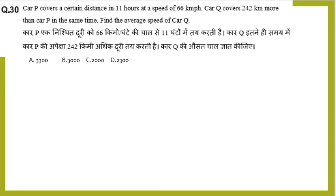Question 30: Car P covers a certain distance in 11 hours at a speed of 66 kilometers per hour. The distance formula is time into speed, so time is 11 hours and speed is 66 km/hr. This gives us 726 kilometers.